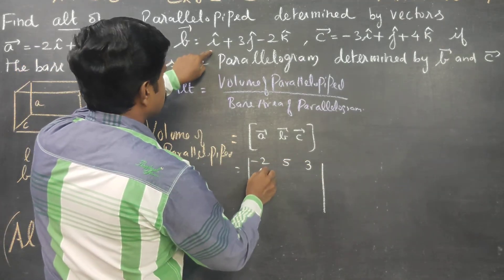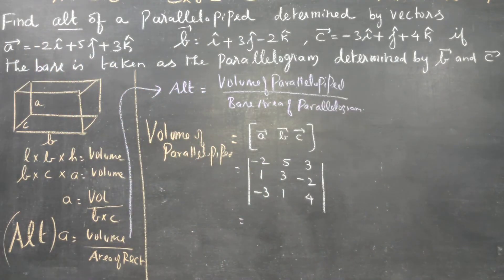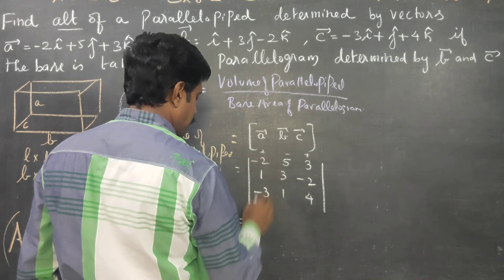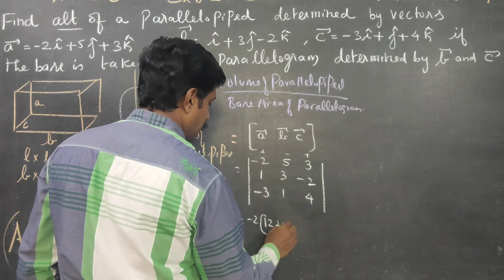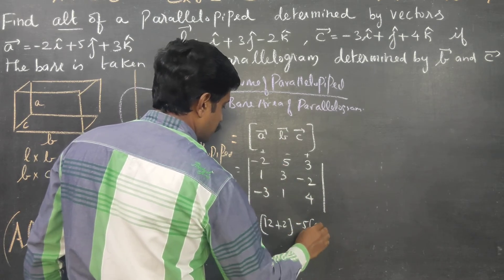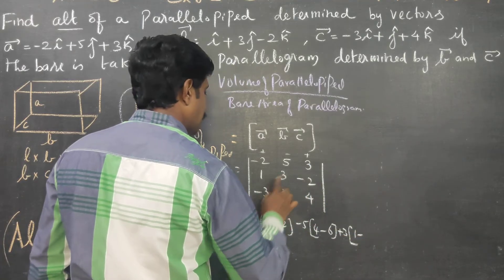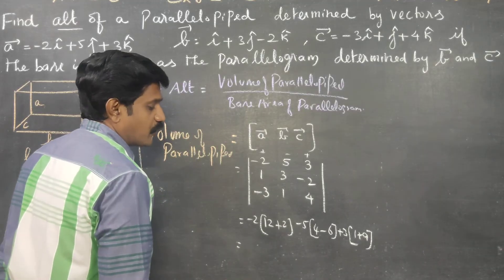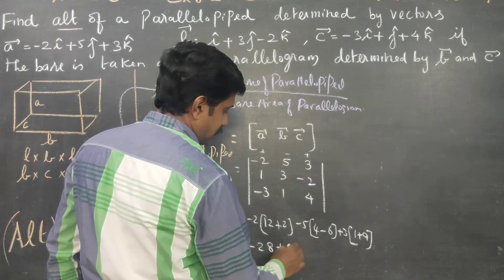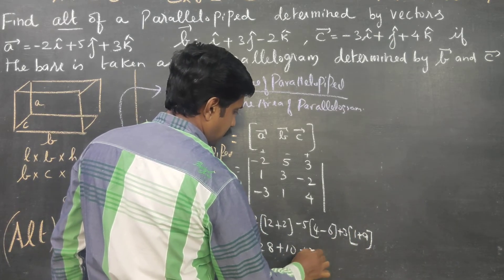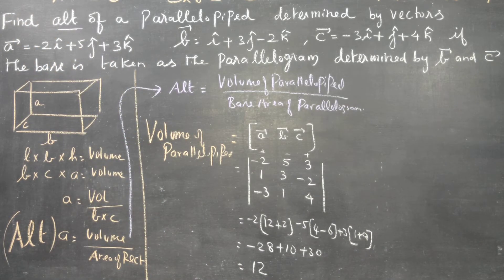The determinant is formed with A = (-2, 5, 3), B = (1, 3, -2), C = (-3, 1, 4). Expanding this determinant with plus-minus-plus: -2 into (12 - (-2)) + 2, minus 5 into (4 - (-6)), plus 3 into (1 - (-9)). That gives -2(14) - 5(10) + 3(10) = -28 + (-10) wait: -28 + (-10) — recalculating: -28 + 40 = 12. So the volume of the parallelepiped is 12.